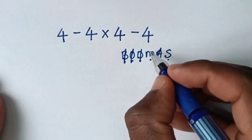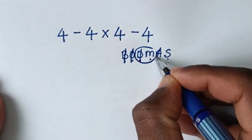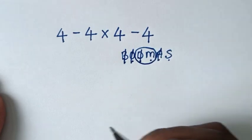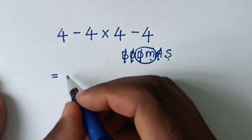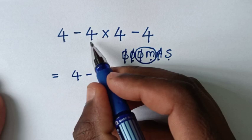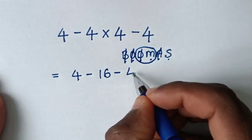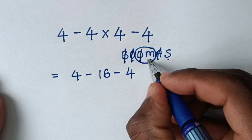Now we start to deal with this group of division and multiplication. We don't have division so we deal with multiplication only. So it will be equal to 4 minus 4 times 4, which is 16, then minus 4. Now we already dealt with multiplication.